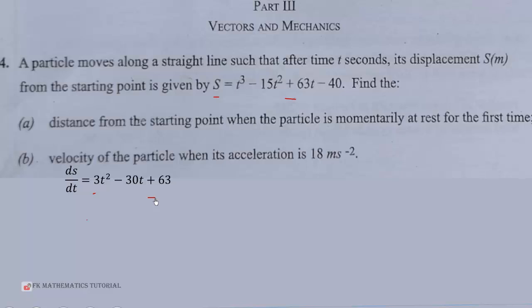So, when the particle is momentarily at rest, then the ds/dt is equal to 0. That is, the velocity is equal to 0.